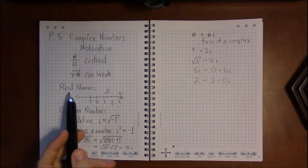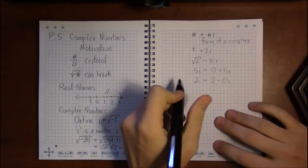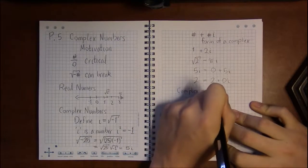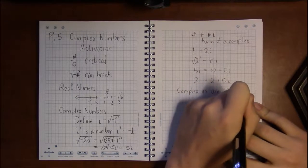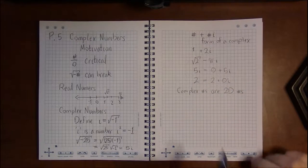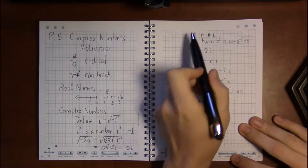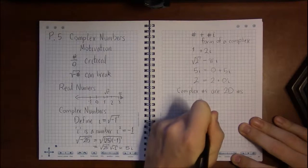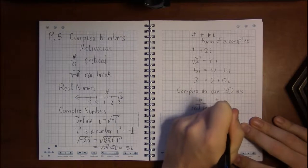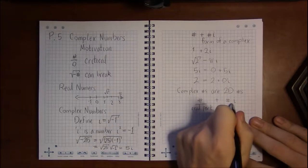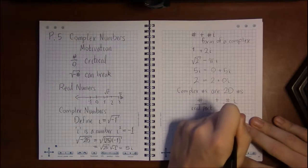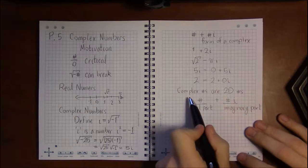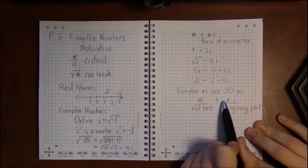Real numbers lie on a number line, but it turns out complex numbers are two-dimensional numbers. The first part of a complex number is called the real part, and the second part — the something times i — is called the imaginary part. i itself is called the imaginary number. So a complex number has two parts: a real part without i, and an imaginary part with i.